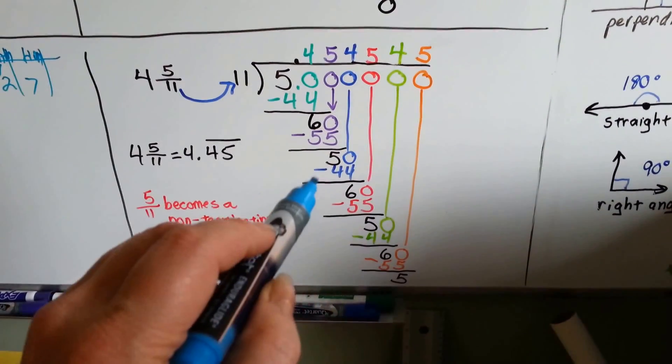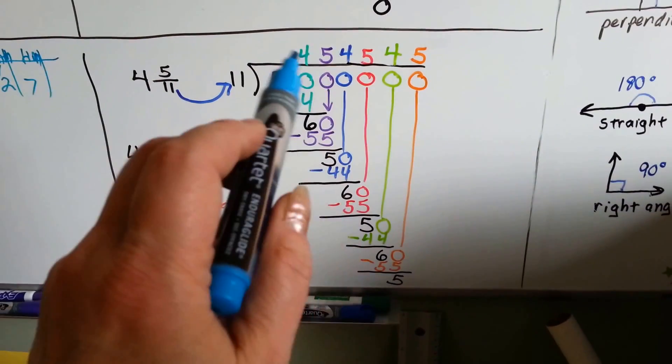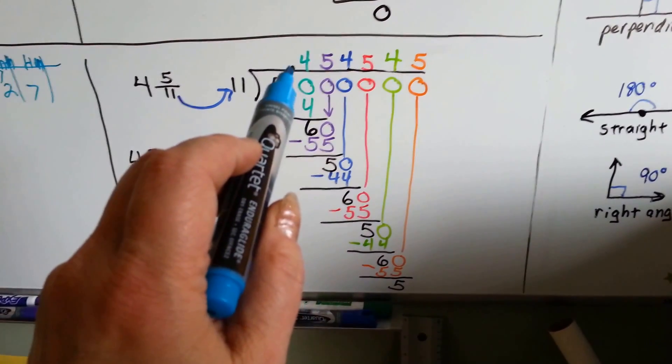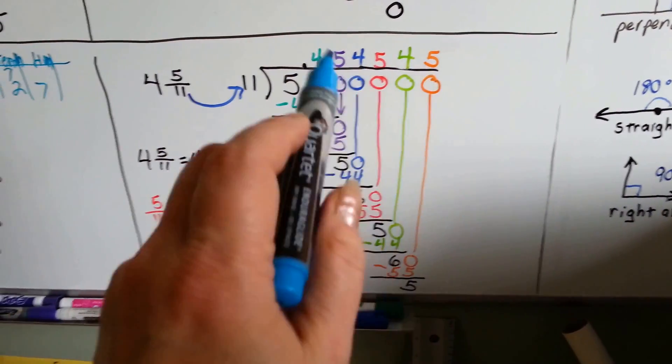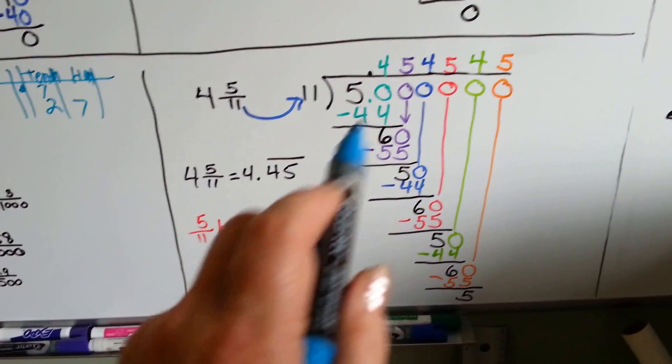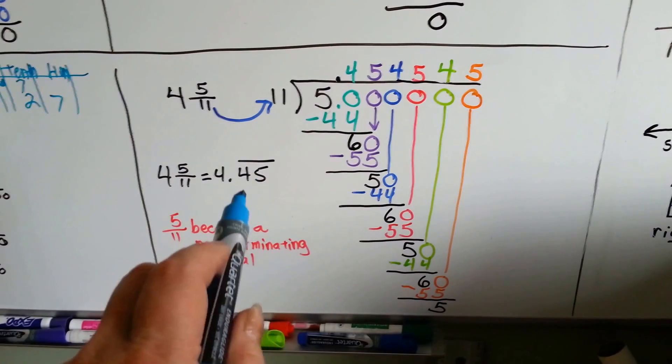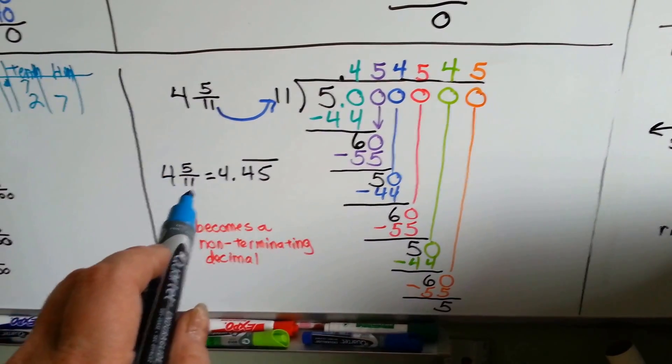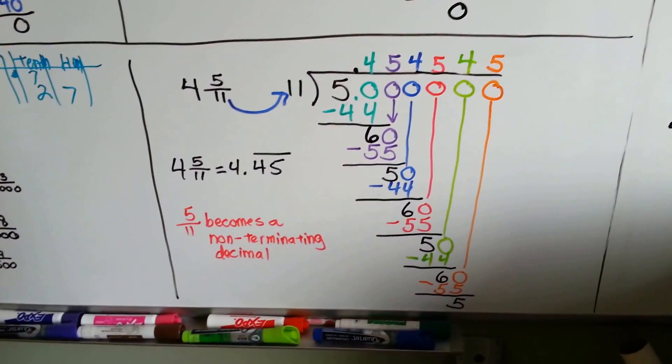And we know 4 can fit into that because 11 times 4 is 44. And what ended up happening was we got 50 and 60 and 50 and 60 each time we added a zero, and our decimal number became 454545. So we know that this is a repeating decimal, a non-terminating decimal. Because the 4 and the 5 are the numbers that are repeated, that's what we put the bar over. 4 and 5/11 became 4.45 with the bar over the top.